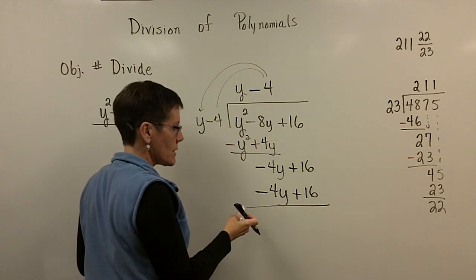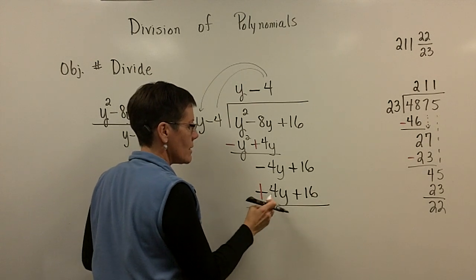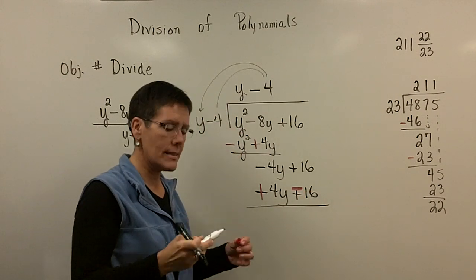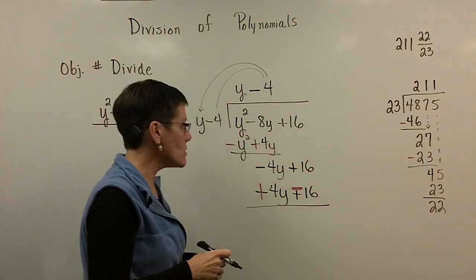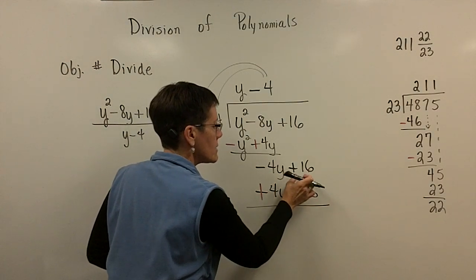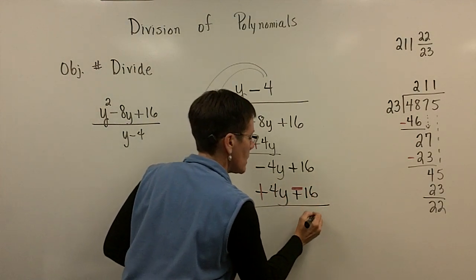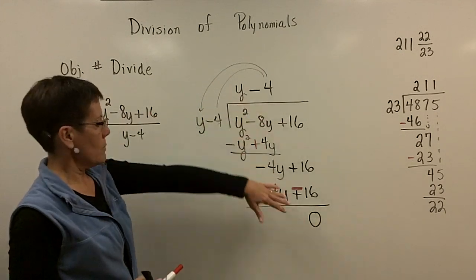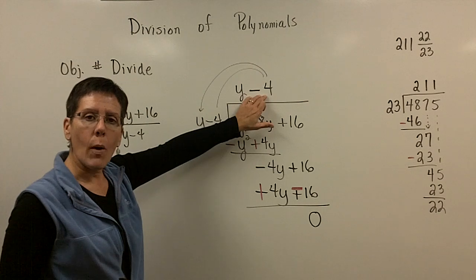And then you have to subtract. So you have to add the opposite. So you have to make this positive. And I use a color so that I can know that red always stands out over the black. The red is always the proper sign. So this one and this one add to be 0. And positive 16 and a minus 16 add to be 0. And this one has a remainder of 0. And so the answer is the y minus 4.